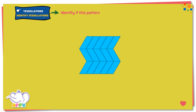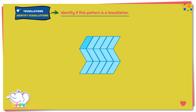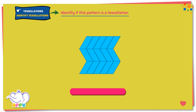Identify if this pattern is a tessellation. Here the shape repeats. There are no gaps in between and they all fit together. So this is a tessellation. Much better.